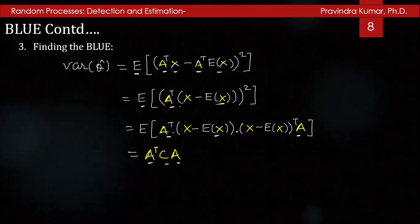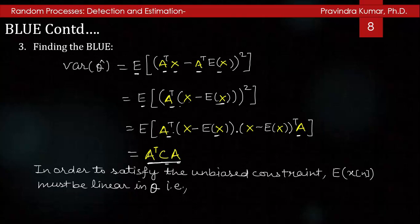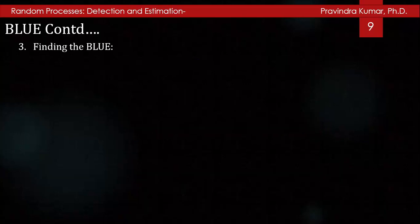The BLUE is derived by finding the vector a which minimizes a^T C a, subject to the unbiasedness constraint E[θ̂] = θ. In order to satisfy this constraint, E[x[n]] must be linear in θ, meaning E[x[n]] = s_n · θ where s_n's are known. Otherwise it may not be possible to satisfy the constraint. For example, x[n] = s_n θ + ω[n], so BLUE is applicable to amplitude estimation of a known signal in noise.